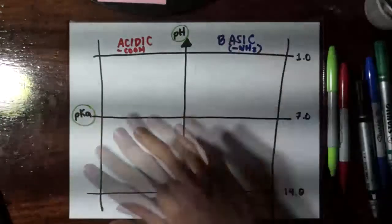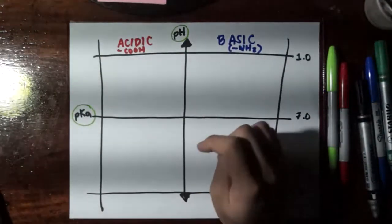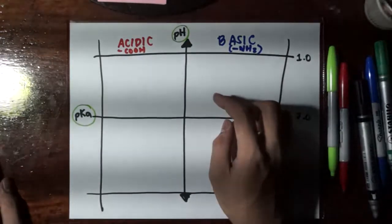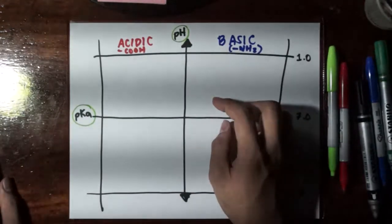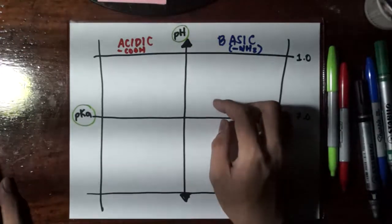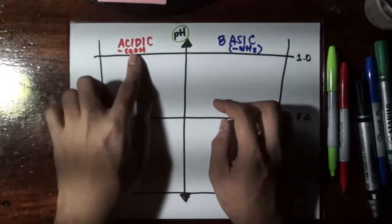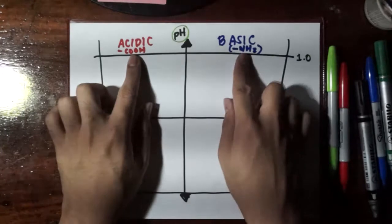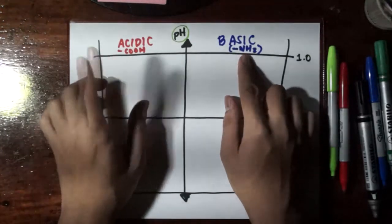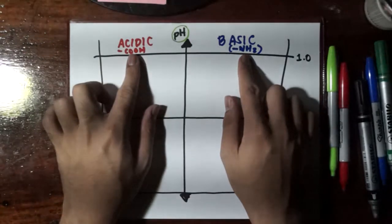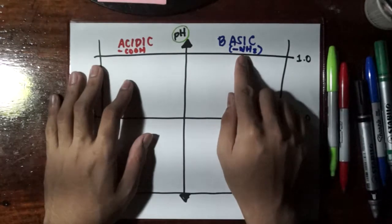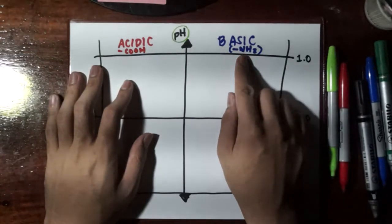All amino acids that we have just discussed in structure always have two functional groups at the minimum, which is part of their constant portion. That is the acidic carboxyl group and the basic amino group. The acidic group, when charged, becomes negative. And for the amino group, when charged, becomes positive.